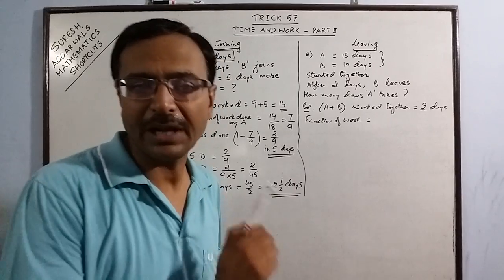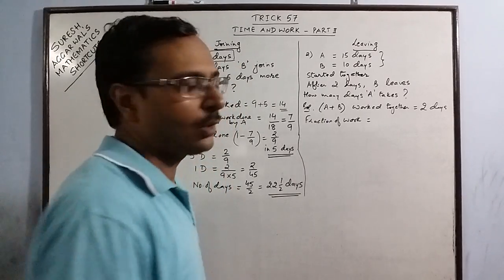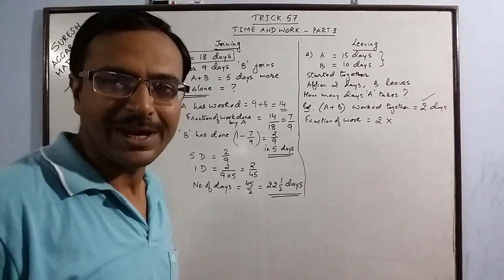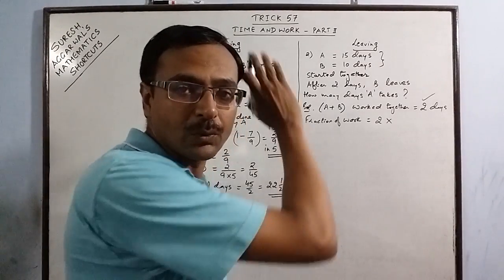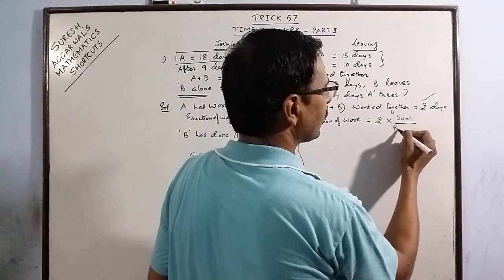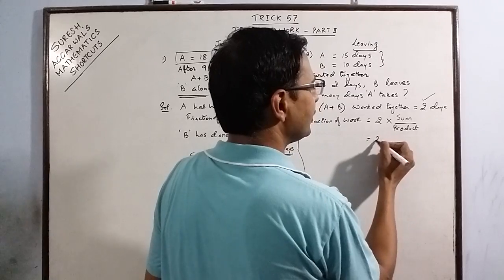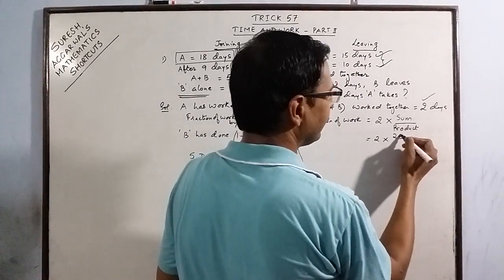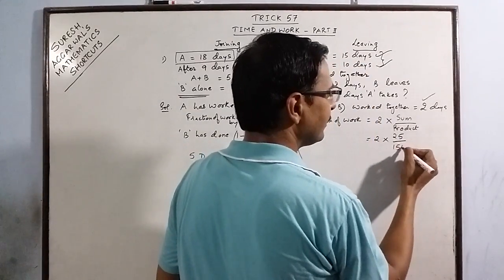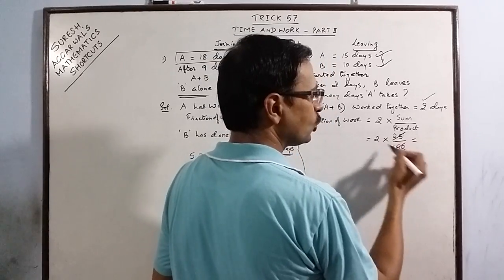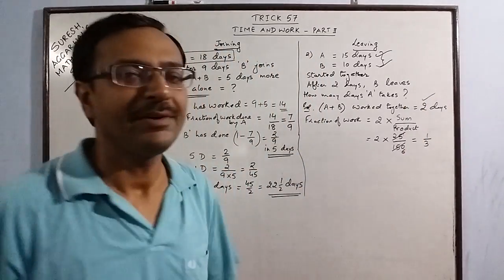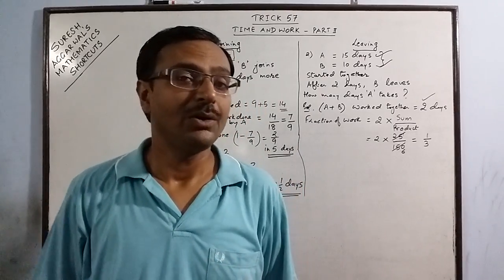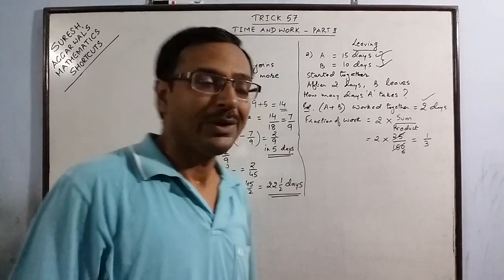We calculate the fraction of work complete before B left. They worked for two days. Using the concept from Part 1, put the sum in the numerator and the product in the denominator. Sum of days: 15 + 10 = 25; product: 15 × 10 = 150. So the fraction = 2 × 25 / 150 = 50/150 = 1/3. One-third of the work was complete before B left.